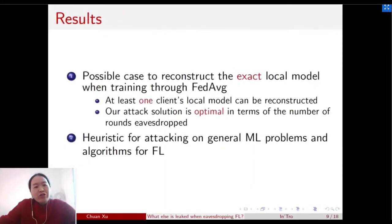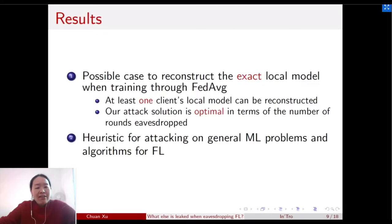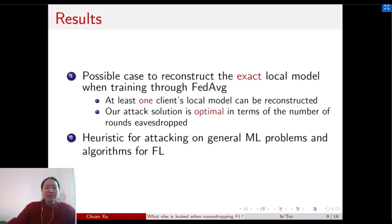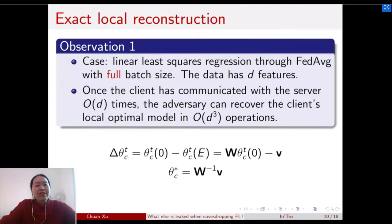Our results first show a tractable case for reconstructing the exact local model when trained through the FedAvg algorithm. More precisely, we show that at least one client's local model can be reconstructed. We also show that our attack solution is optimal in terms of the number of rounds the adversary needs to eavesdrop.